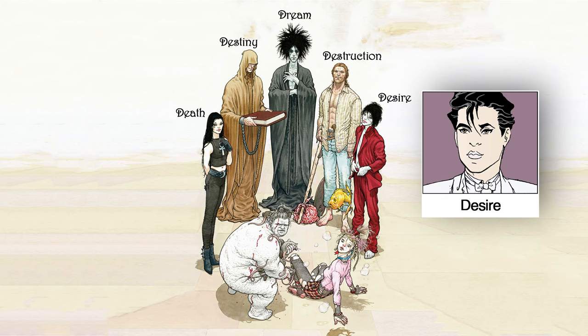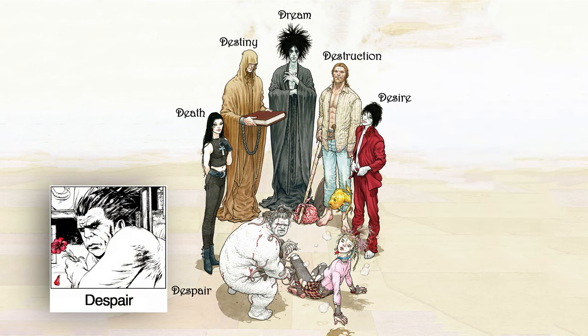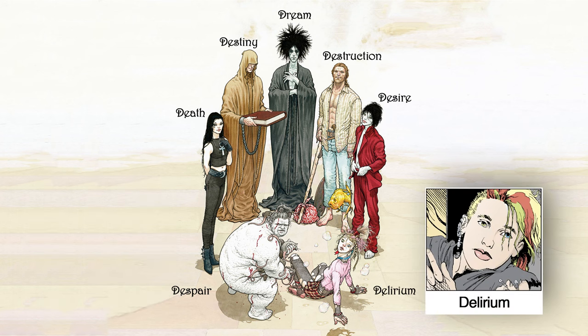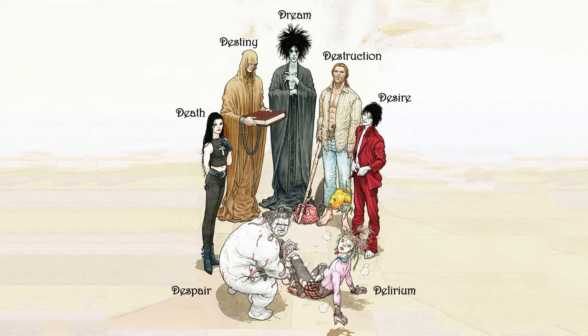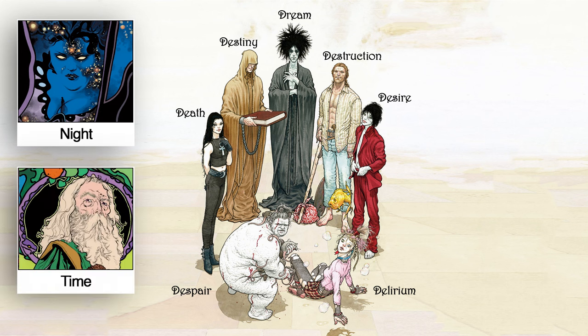There is Desire — the older twin of Despair — who has no gender and appears in the form one most desires. Impulsive and self-centered, Desire's vanity holds no bounds. Despair, the younger twin, appears as a squat, naked, morbidly obese woman whose realm is a gray, foggy space filled with rats and mirrors she uses to look upon people in their despair. Delirium is the youngest; she used to be known as Delight, personification of pleasure and joy, but she evolved into Delirium long before the story begins. In the Sandman Overture prequel, we also meet Night, their mother, and Time, their father.